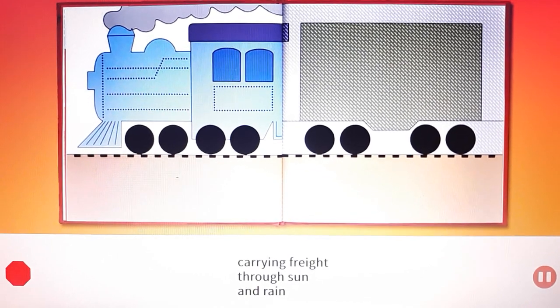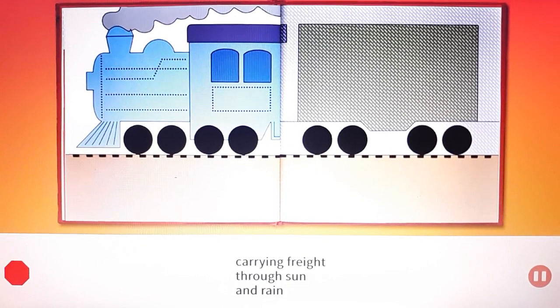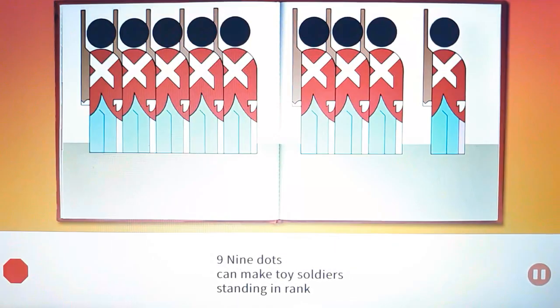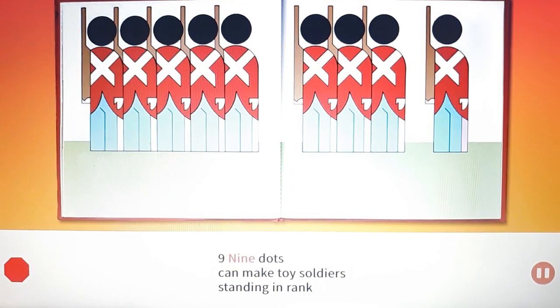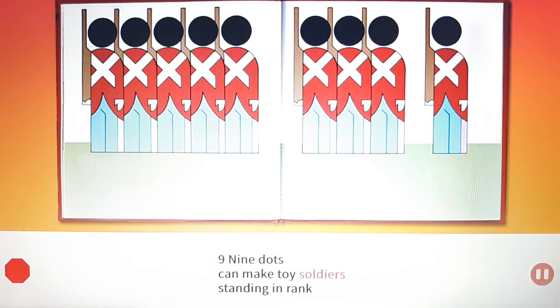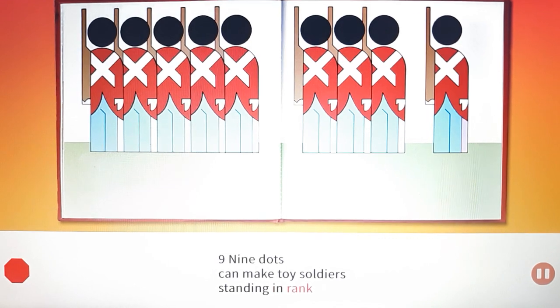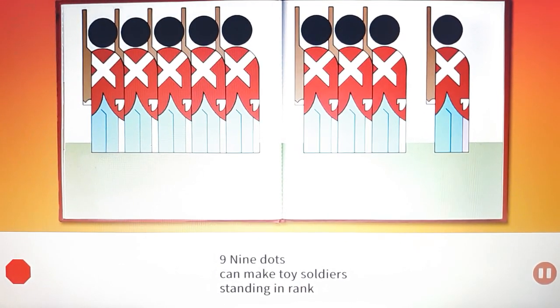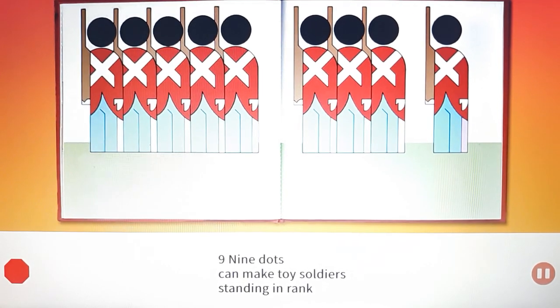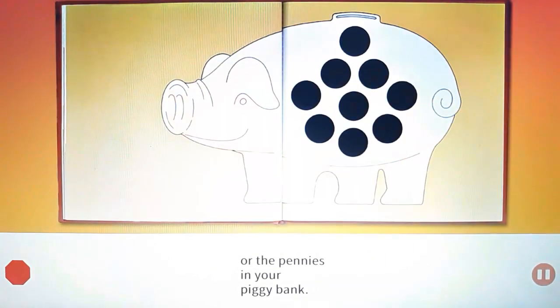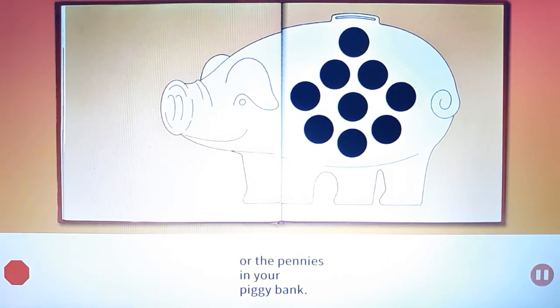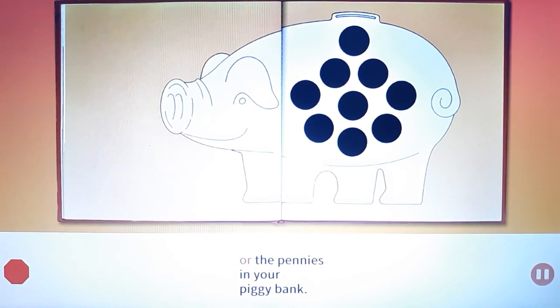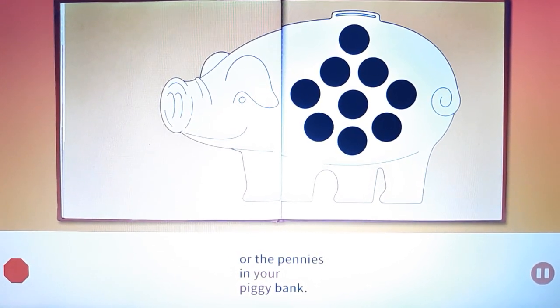Nine. Nine dots can make toy soldiers standing in rank or the pennies in your piggy bank.